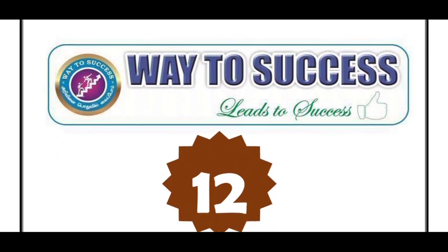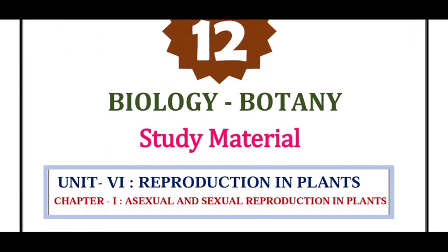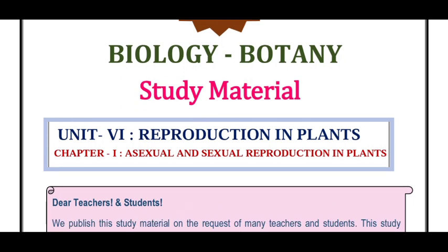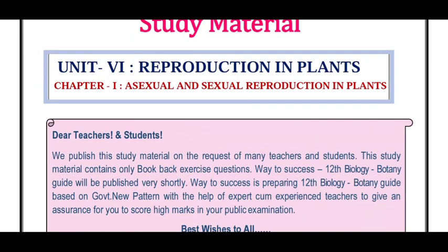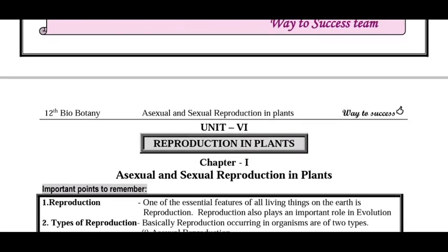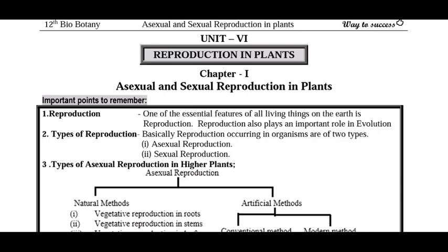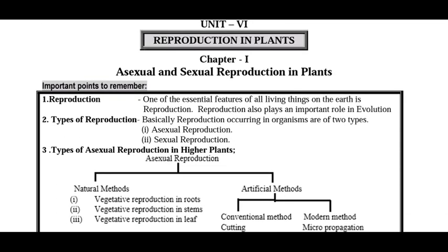This is a way to success — this is a study material. First unit, that is botany, first unit. Biology book, this is the sixth unit. This is a full study material. The sixth lesson, chapter 1 — that is botany, chapter 1. This is a full study material.